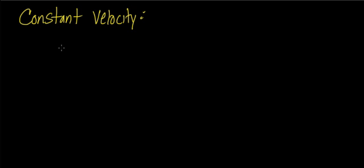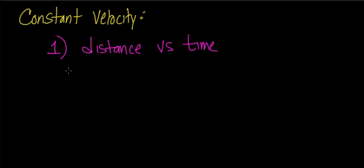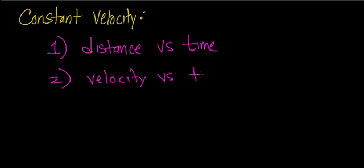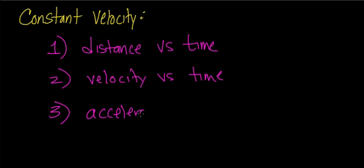In this session, we're going to look at the graphical interpretation of an object moving with constant velocity. There are three graphs that we can look at: the distance versus time graph, which will tell us where the object is at a specific instance of time; the velocity versus time graph, which tells us how fast an object is moving at a particular moment of time; and then there's the acceleration versus time graph. Each type of motion, whether it's constant velocity or constant acceleration, is going to have one of these graphs, and in this video we'll look at all three for an object traveling with constant velocity.